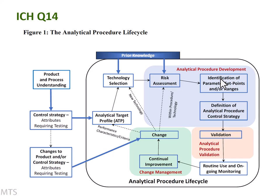Defining the control strategy is the big picture: what the method is, how it's used, how it's written, what the parameters are, and also the system suitability. You should have at least a prototype system suitability before going into validation, though it's reasonable to revisit it after validation. Once you have your method ready, you go into the validation box — that's Q2 — which could be quite a lengthy study.